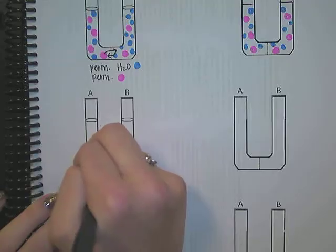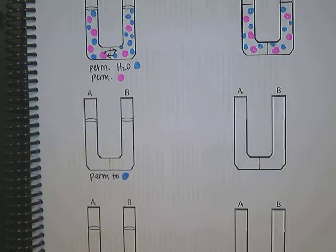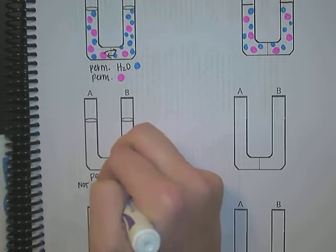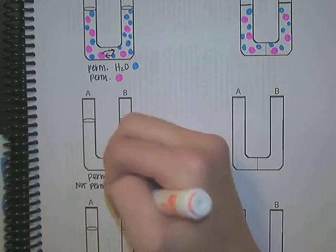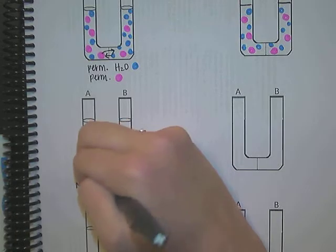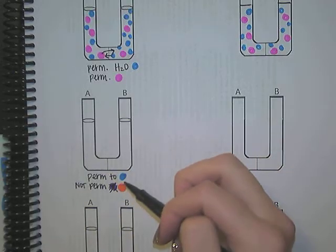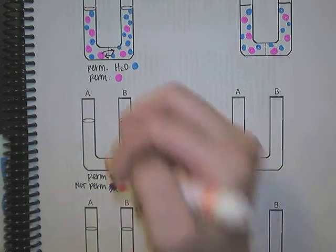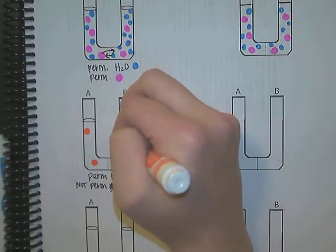My semi-permeable membrane is still permeable to water, which I will represent with blue dots, and let's say it is not permeable to orange dots. That means my blue dots can pass through the semi-permeable membrane, but my orange dots cannot. Let's say we have an equal amount of solution, and my left side has fewer orange solutes than my right side.